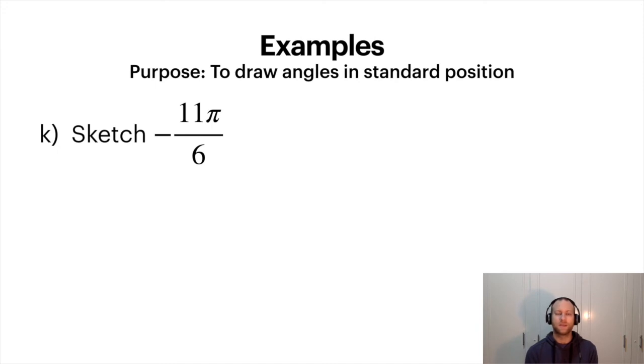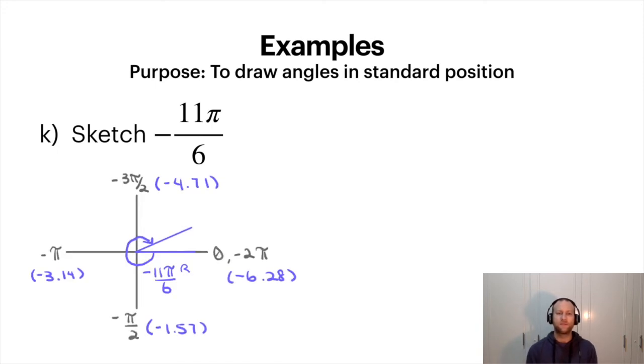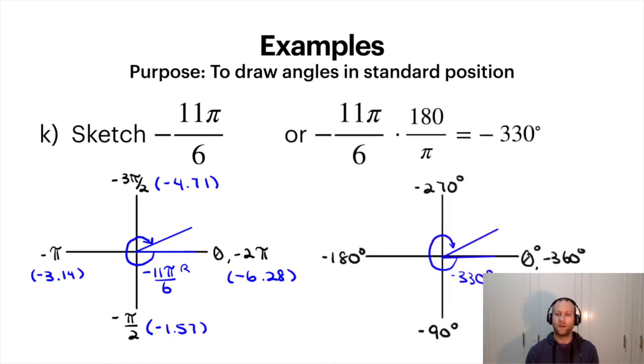Here we go another one. So sketch negative 11 pi over 6. Again doing it in the negative direction this time. So I change the axes. Or turn it into degrees and plot the same thing. Notice the degrees look the same, just you have different things on your axes.